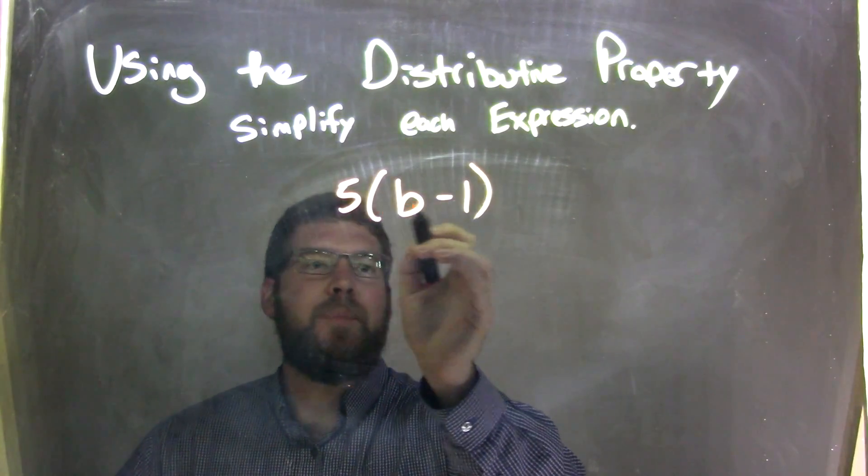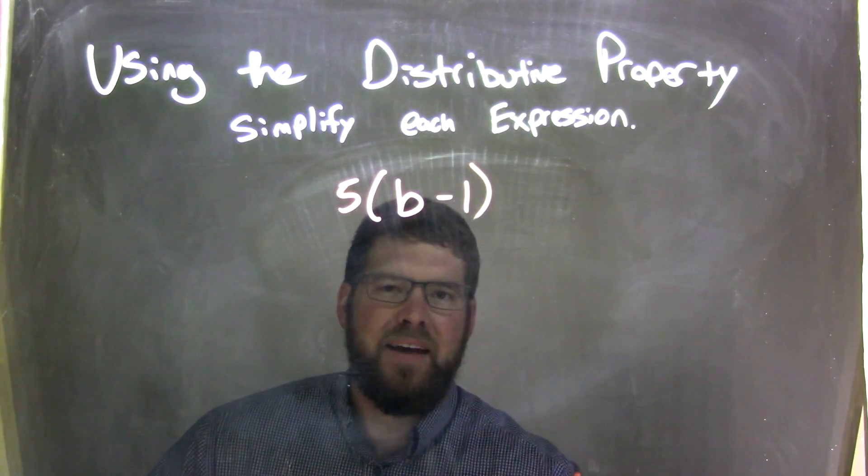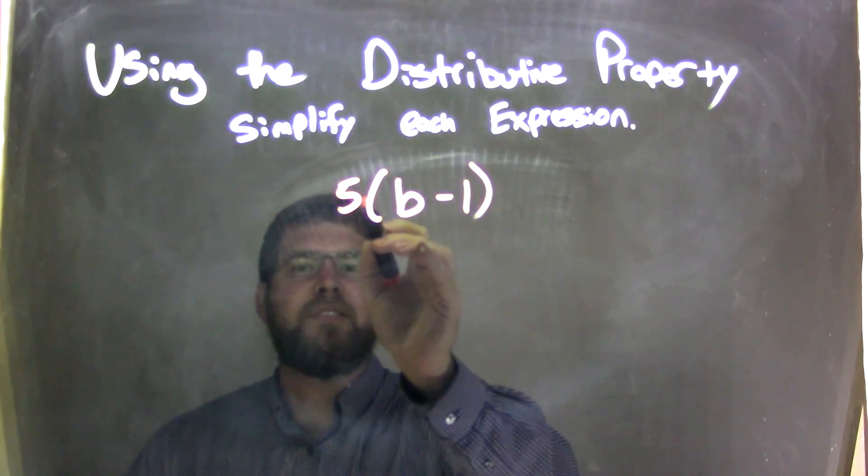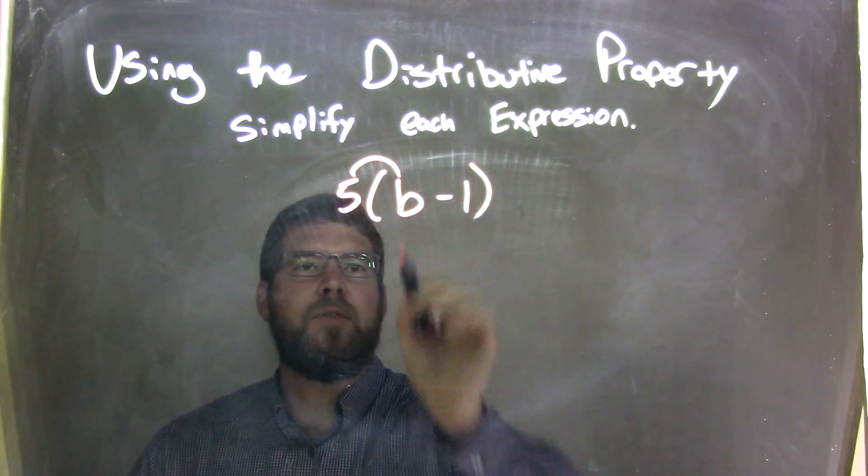Well, b minus 1 is inside the parentheses, not like terms, nothing I can do about it. 5 is on the outside, it's being multiplied. We can distribute the 5 in.